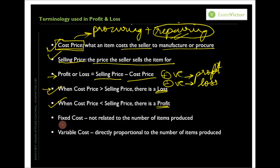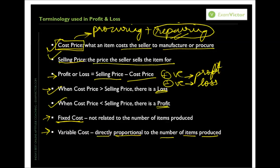Fixed cost is a cost that is not related to the number of items produced. For example, if you own a small manufacturing plant, the cost of the machine or the rent you pay doesn't change whether you produce one item, a thousand, or ten thousand — that is a fixed cost. Variable cost is directly proportional to the number of items produced. For example, if producing a thousand items uses two liters of oil, producing two thousand items uses four liters — that is a variable cost.